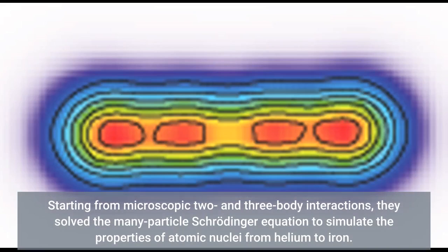Starting from microscopic two- and three-body interactions, they solved the many-particle Schrödinger equation to simulate the properties of atomic nuclei from helium to iron.